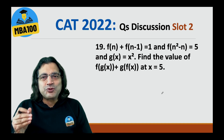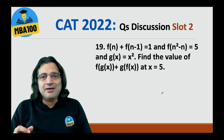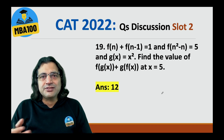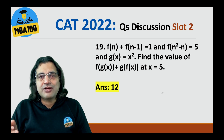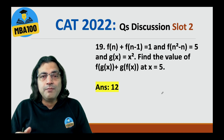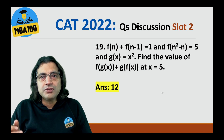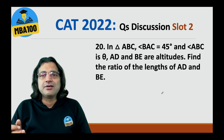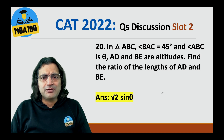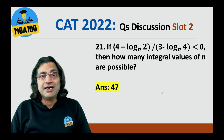This actually was a super sitter for those people who are not allergic to algebra. The answer is, of course, 12. Some people have given the answer as 30, but the actual answer is 12. Minus 4 plus minus 4 squared. One of the simpler questions of the test and the answer is root 2 sine theta.